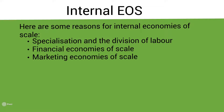The next example of internal economies of scale is larger buying power. The more resources a firm buys, the lower the unit cost tends to be. For example, food suppliers such as Tesco are able to negotiate lower prices because they buy goods and services in such large quantities.